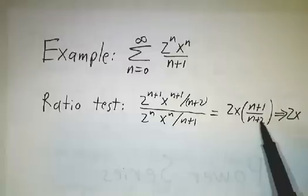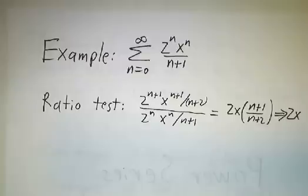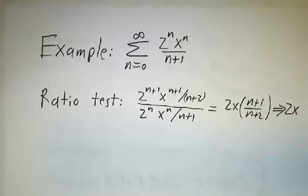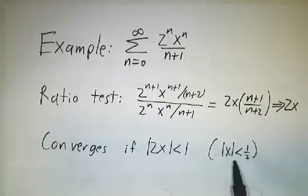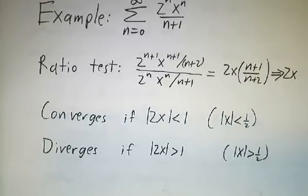And then you wind up with n plus 1 over n plus 2. And in the limit, as n goes to infinity, that goes to 1. So the ratio is 2x. The ratio test tells us that this converges if 2x is less than 1, in other words, if x is less than 1 half. And it diverges if 2x is bigger than 1, in other words, if x is bigger than 1 half.